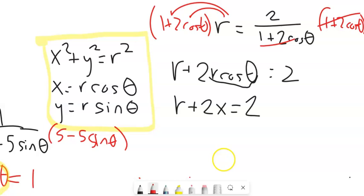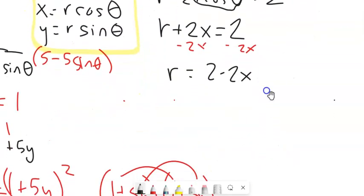So subtract 2x from both sides. Get it out of there. And I've got r equals 2 minus 2x. So then from here, I want an r squared, so I'm going to square both sides.